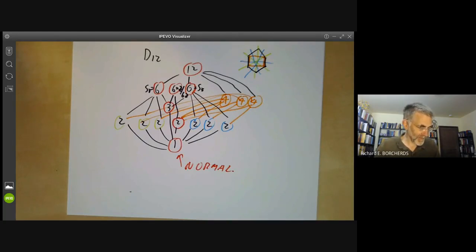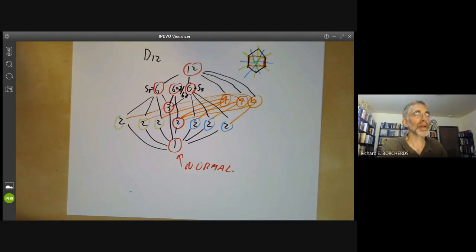So that pretty much does the groups of order 12. Next lecture we will probably do automorphisms of cyclic groups and classify the groups of order 15.